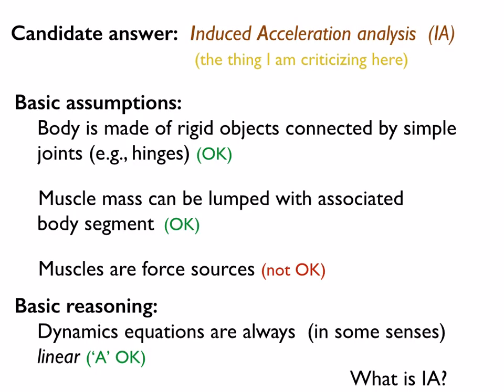The candidate answer is induced acceleration analysis. It makes a robotic model of a body, as we do mostly in biomechanics. It lumps the muscle mass with the body mass. It thinks of the muscles as force sources, which I think is not okay. The basic reasoning is that dynamics equations are always linear — this may be surprising to some people. This is a clever aspect of induced acceleration analysis, which I'll explain now.